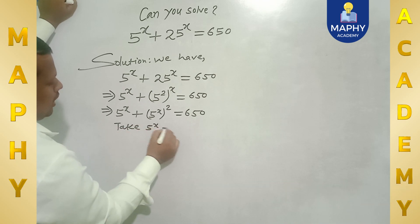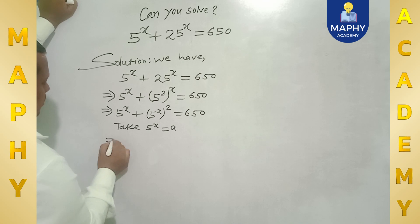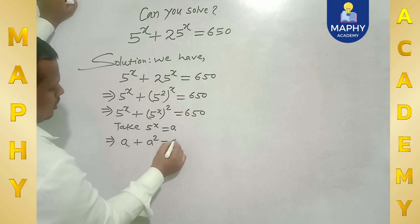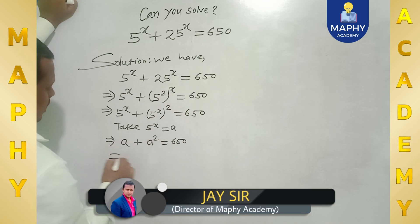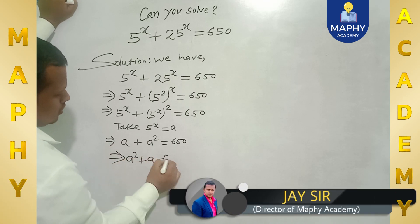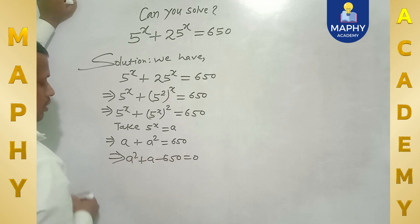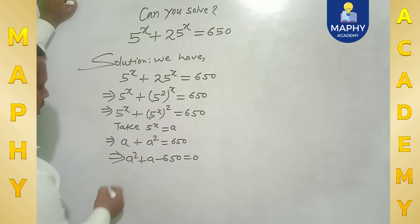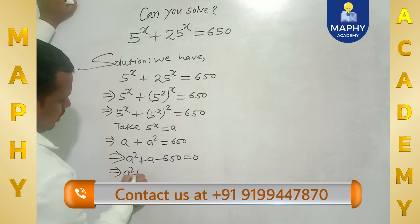Now take 5 to the power x equal to a. Then it can be written as a plus a squared is equal to 650, which implies a squared plus a minus 650 is equal to 0.